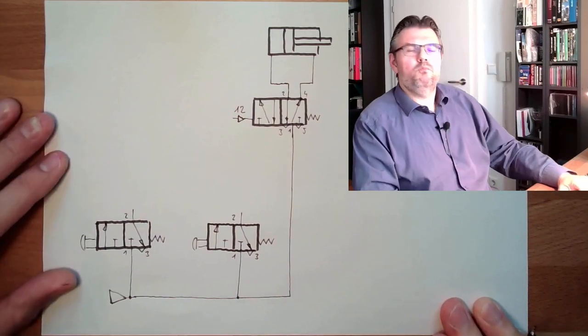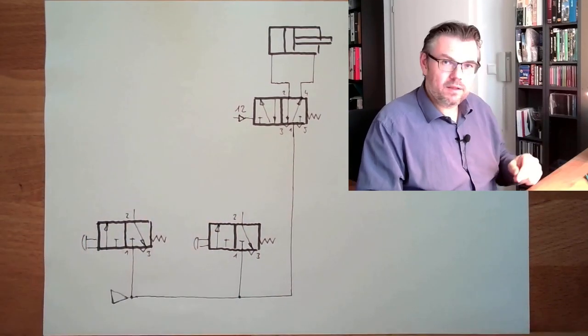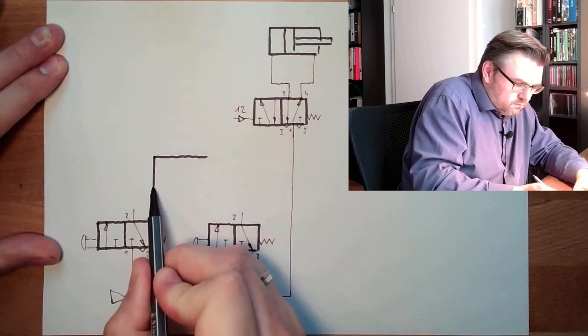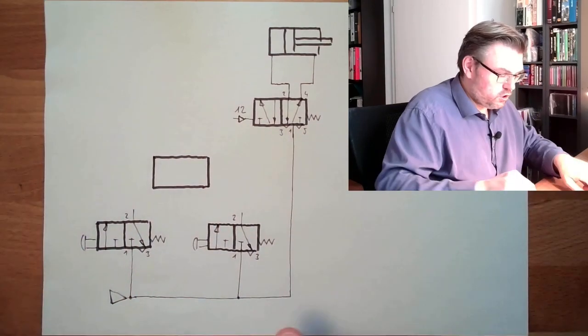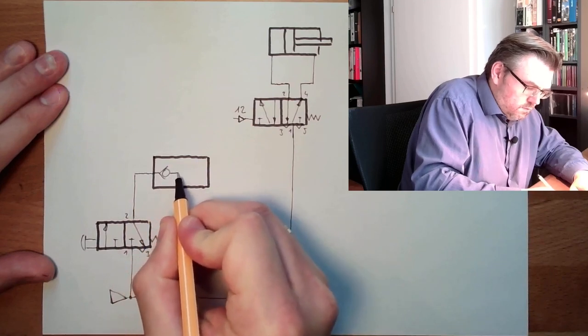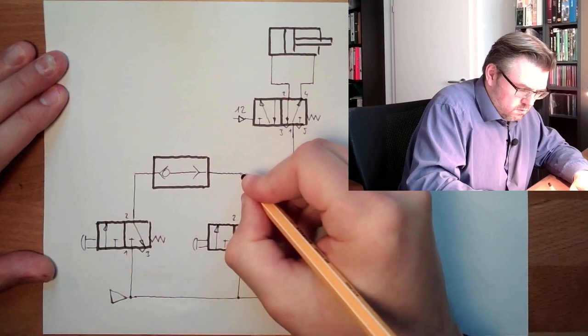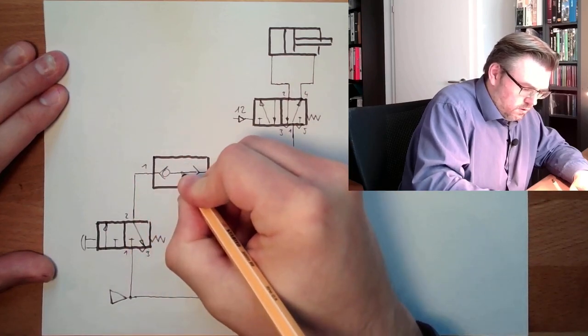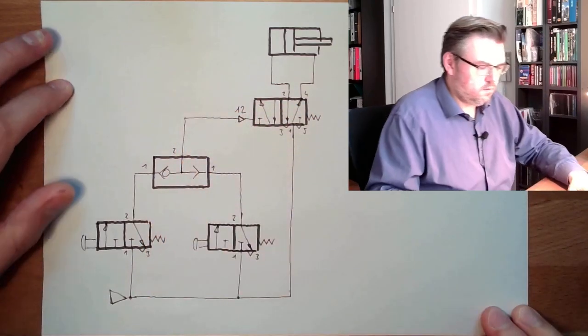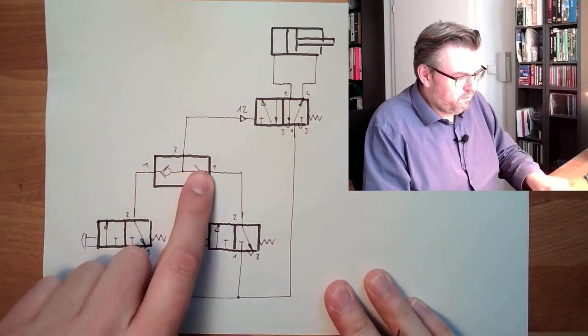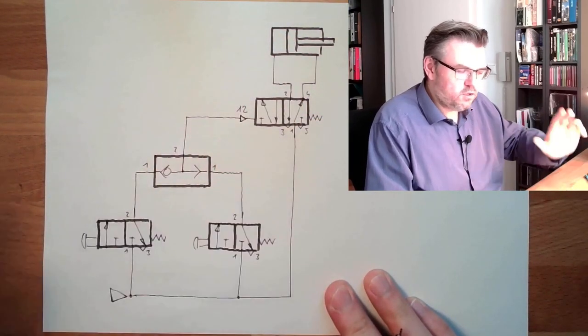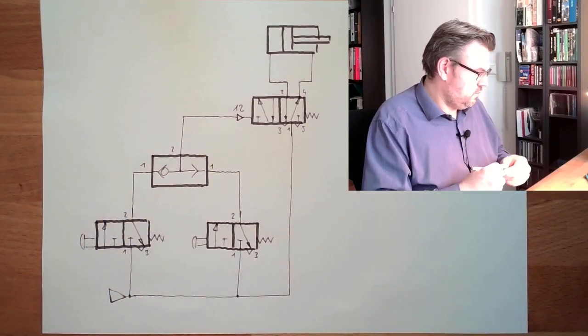If I want to put in pressure, regardless of which button is pressed, there's a special element for this. So-called shuttle valve. If the pressure is now applied from here, shuttle valve will change, apply pressure will move. If the pressure is now applied from here, shuttle valve will change in the other direction, apply pressure, move. So the shuttle, it's an OR. It's an OR combination.